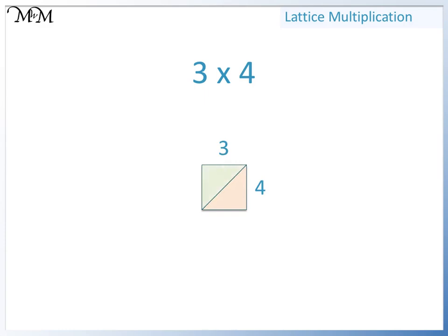3 times 4 equals 12, so we write 2 here in the units, or ones, and we write 1 here in the tens. So 3 times 4 equals 12.